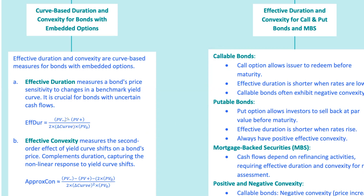This is the formula. Imagine you have a callable bond with a full price of $100.67 per par value of $100. If the government par curve shifts up by 25 basis points, the bond's price drops to $98.05. And if the curve shifts down by 25 basis points, the price increases to $101.75. Using these values, the effective duration would be 7.35. This tells you that for a 1% change in the benchmark yield curve, the bond's price would change by approximately 7.35%.